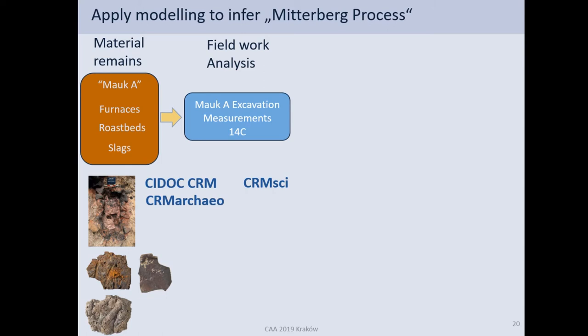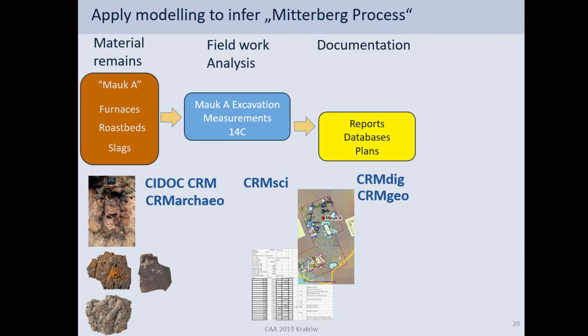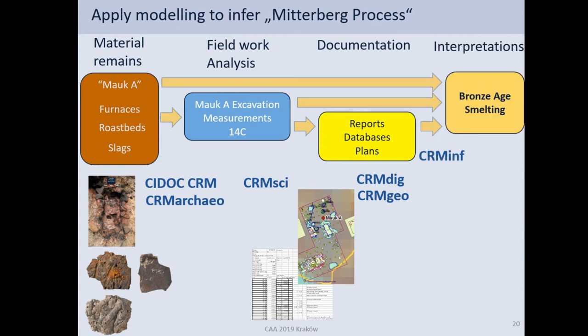CRMgeo is used a little bit for the geometric information. The idea of modeling is: material remains are modeled with CRM and CRMarchaeo, and the fieldwork and analysis are modeled with CRMsci. For example, we have furnaces as material remains or roasted slags, then we had excavations, dendrochronology, and C14 measurements. The documentation can be traced with CRMdig and CRMgeo extensions. Then we have interpretations on these things — the relation from the interpretation back to the remains or fieldwork gives us the provenance of the interpretations, and it's important to record that so I can assess whether to trust an interpretation.